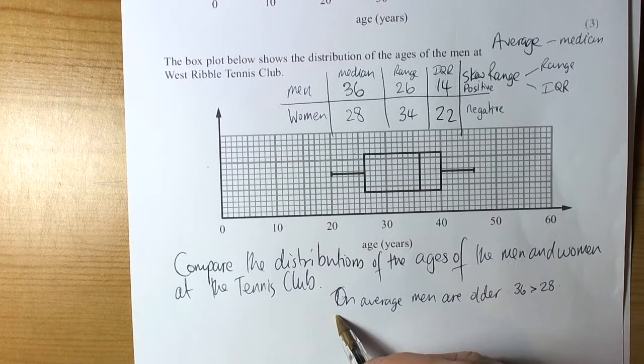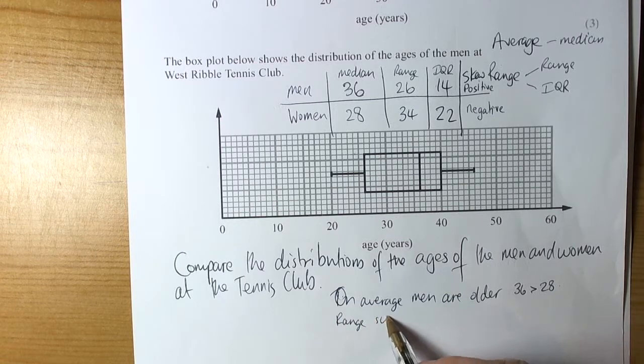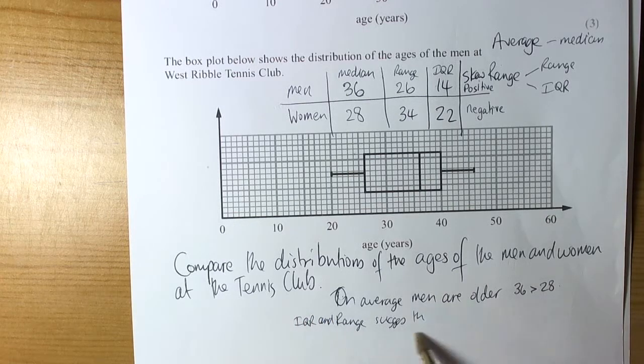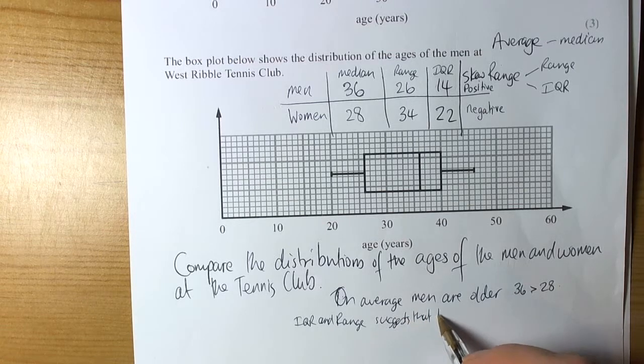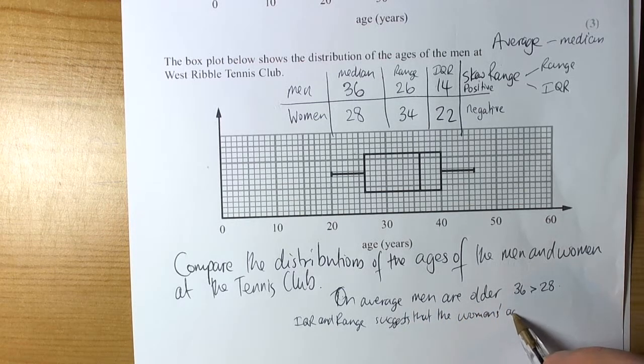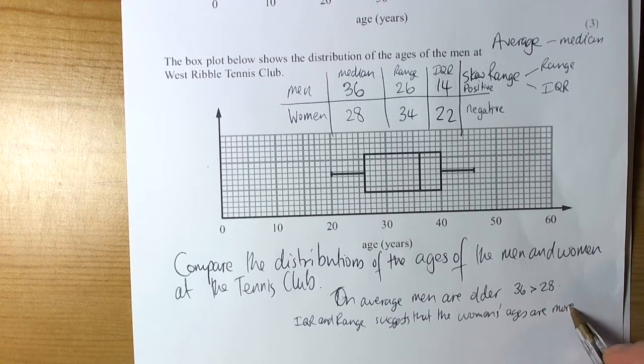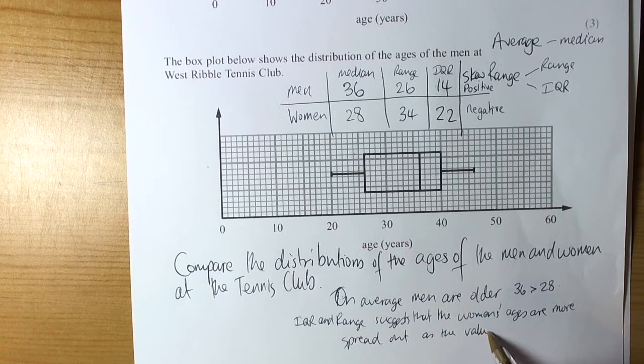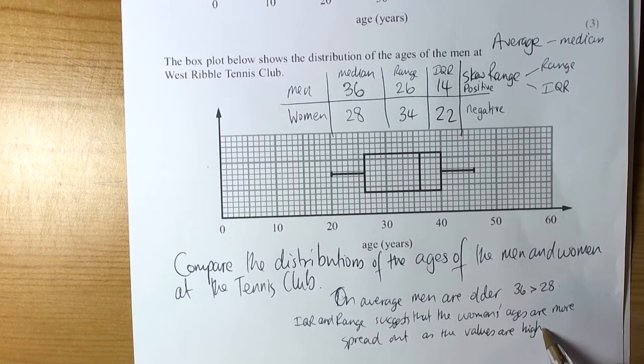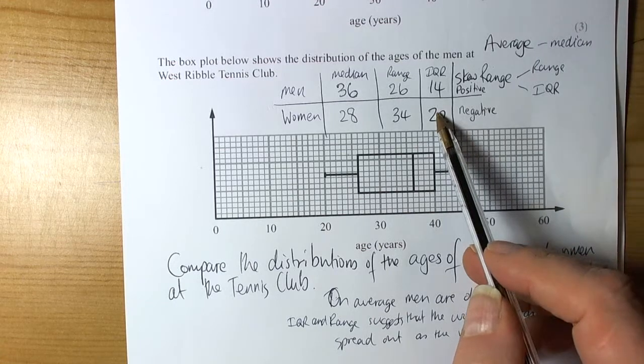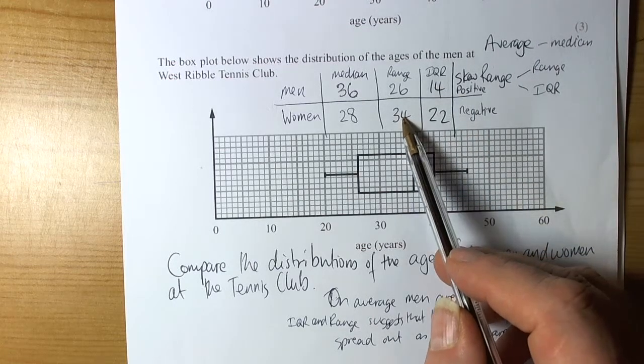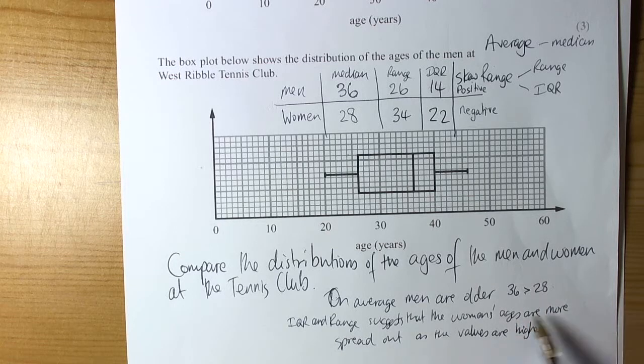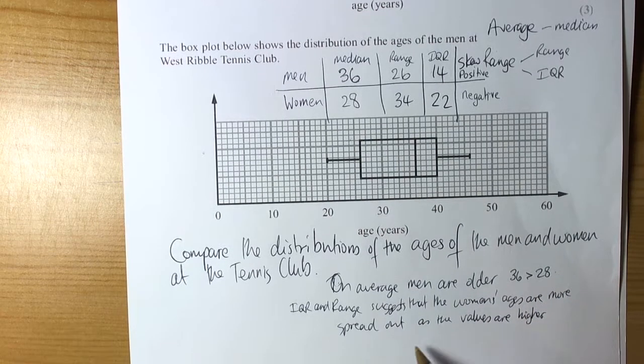We would say that the range suggests, but it's actually the interquartile range and the range. So, the interquartile range and the range suggests that the women's ages are more spread out as the values are higher. So, we can see from the table that the interquartile range for the women is 22, which is bigger than 14, and the range itself is 34, which is bigger than 26. So, both ranges are suggesting that the spread of the women's ages are wider, the distribution is wider. And then we could also mention the skew.